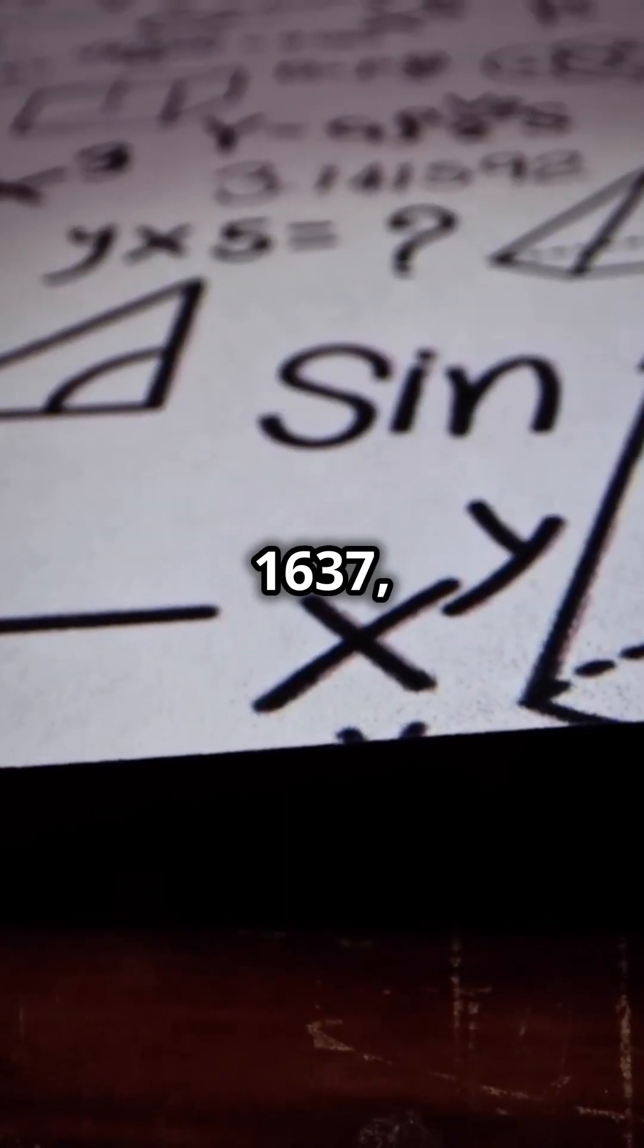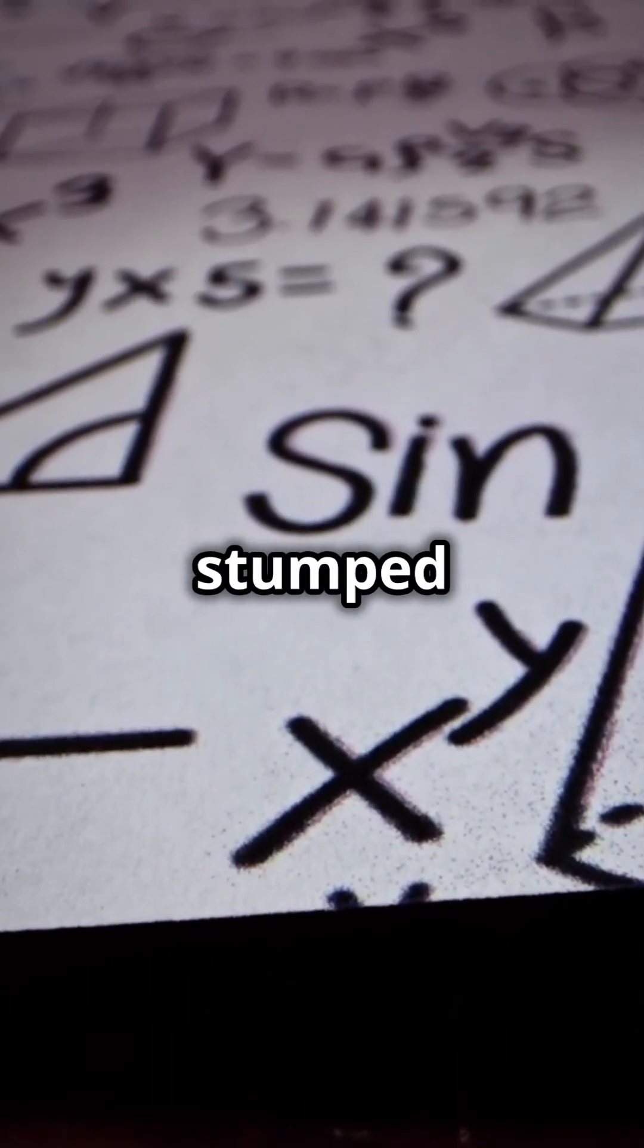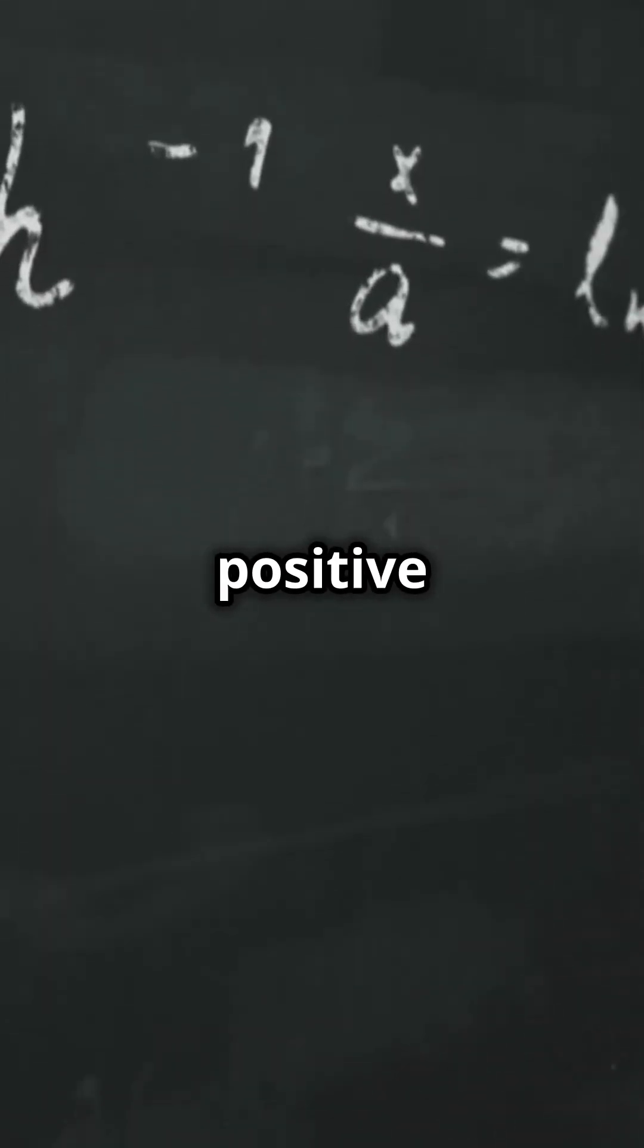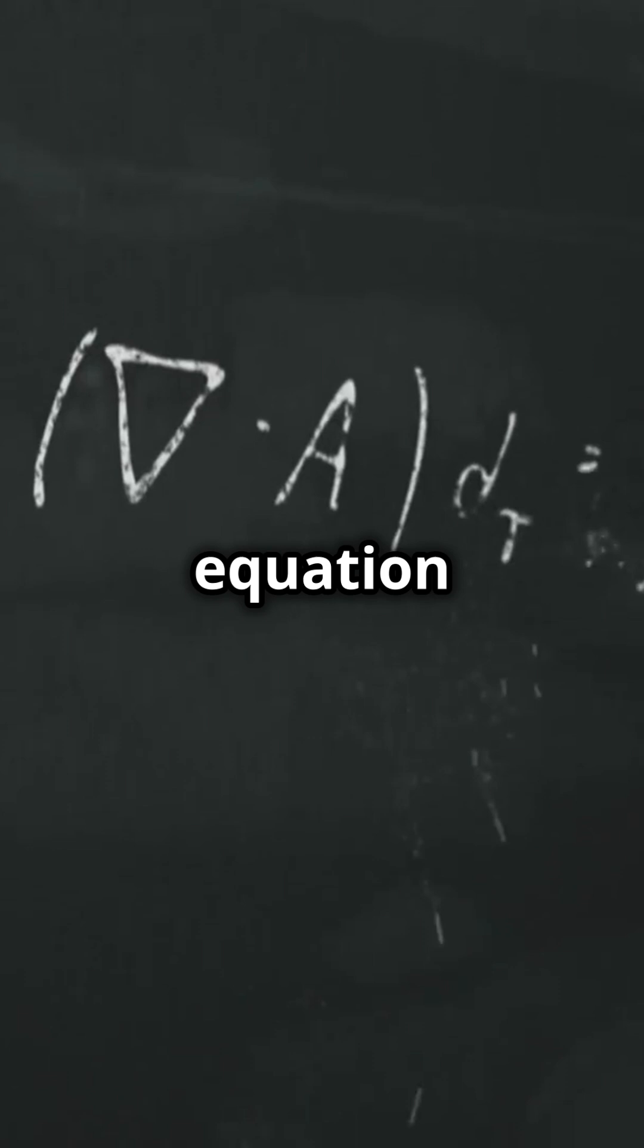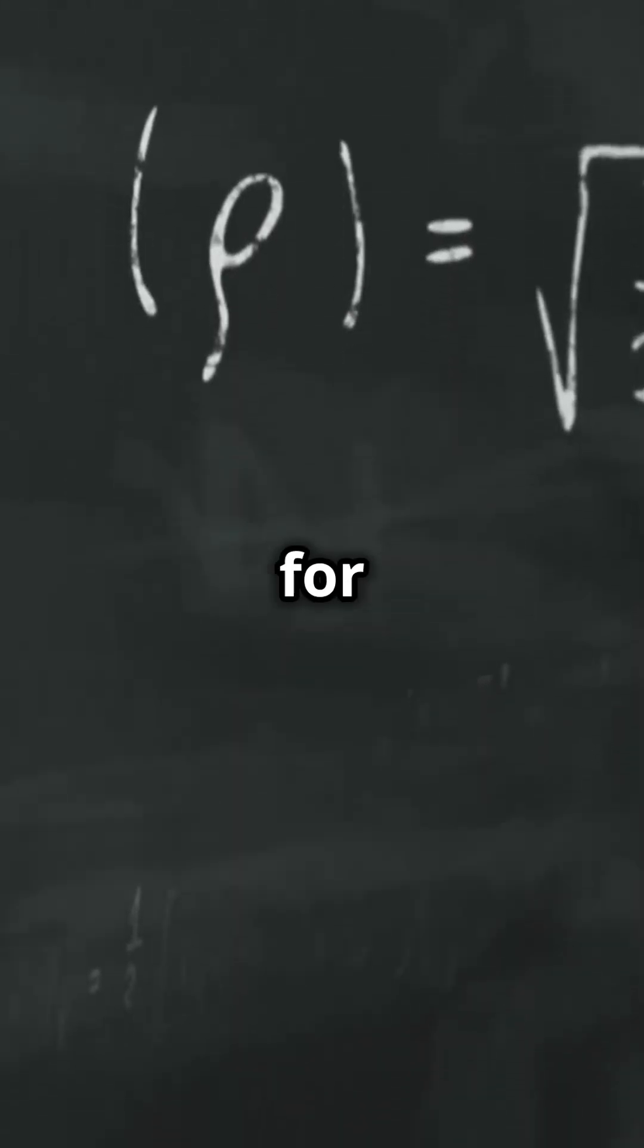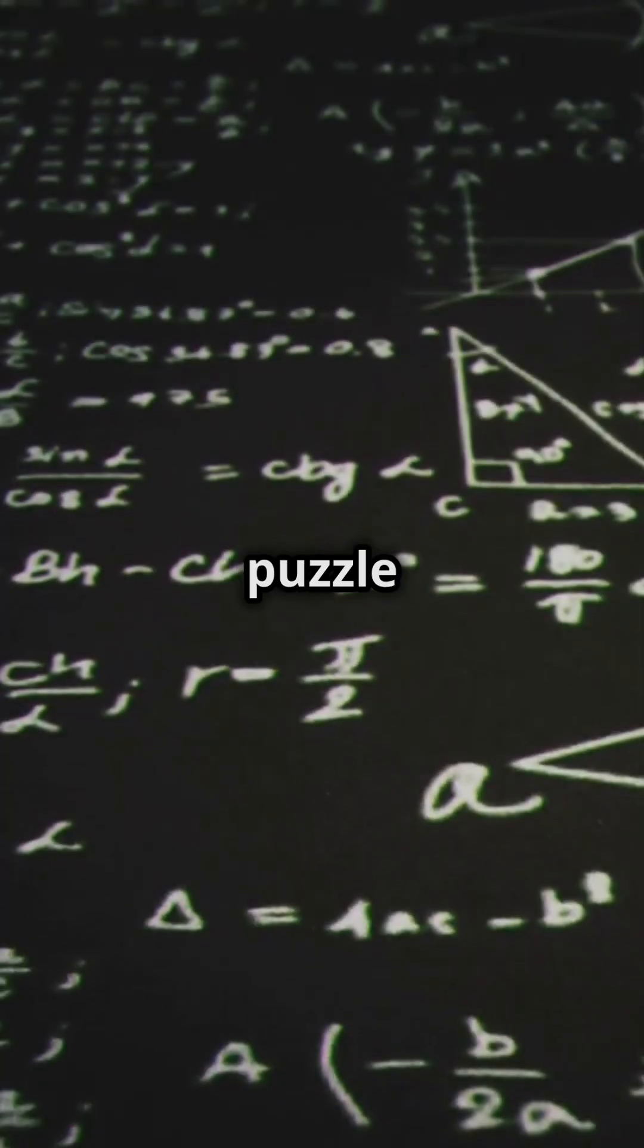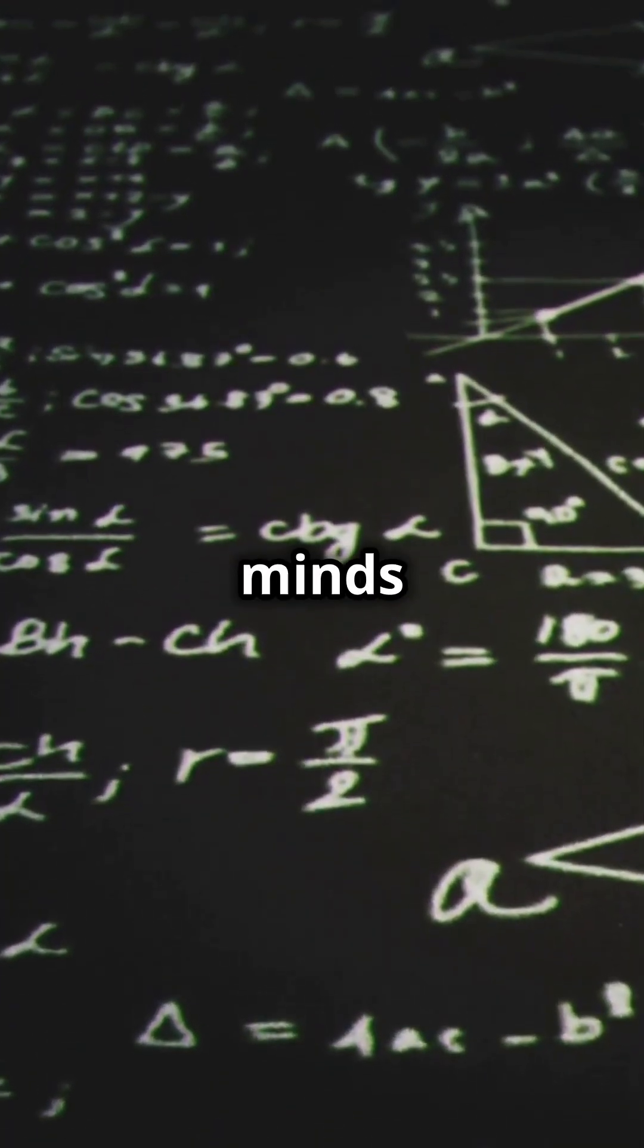Back in 1637, Pierre de Fermat scribbled a note that stumped mathematicians for centuries. He claimed that no three positive integers could ever satisfy the equation a^n + b^n = c^n for any integer value of n greater than 2. It was a puzzle that haunted some of the greatest minds in history.